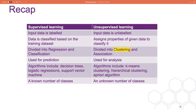For those of you that attended our first machine learning talk, you might remember that we spoke about the different types of machine learning algorithms. These algorithms generally fall into two main categories: supervised learning and unsupervised learning. There is also semi-supervised learning and reinforcement learning, but we're not going to be focusing on these today. Supervised learning input data is often labelled; unsupervised learning is often unlabelled. I will be putting these slides up at the end so you can go back and look at this table.